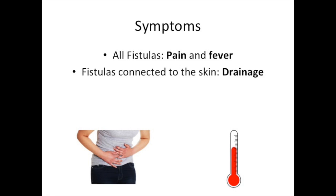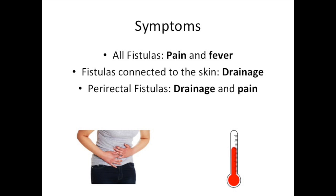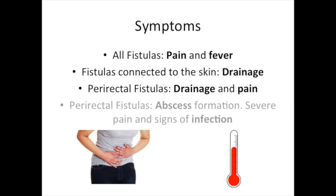When a fistula comes out the skin, like an enterocutaneous fistula, they can manifest as drainage. Symptoms of perirectal fistulas are usually drainage and pain. Sometimes perirectal fistulas can form an abscess. These present with more severe pain and signs of an infection such as fever.